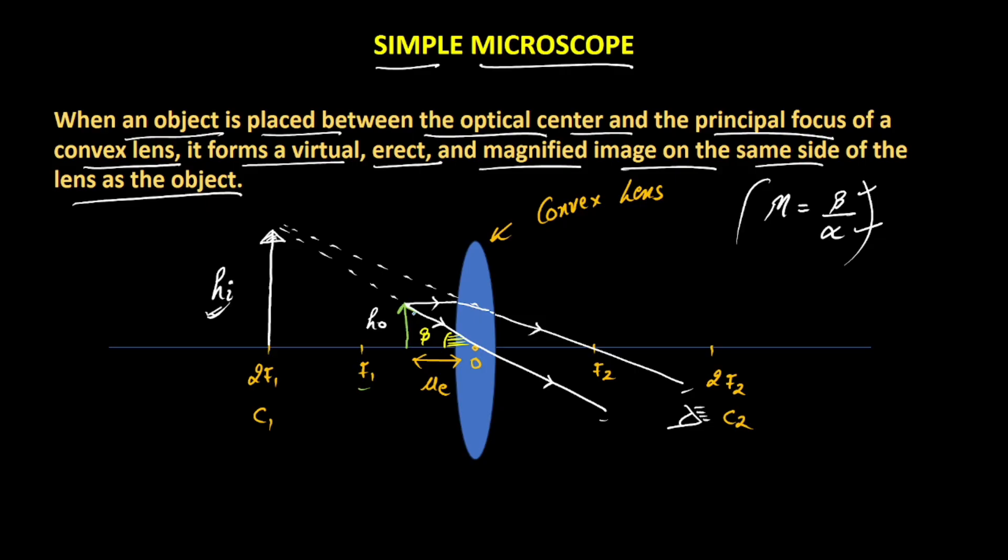If we carefully see this particular triangle, we can say that tan beta will be equal to perpendicular by base. Perpendicular in this case would be H0 divided by base would be UE. And considering the angle is very, very small, tan beta would roughly be equal to beta. So beta would be equal to H0 divided by UE.